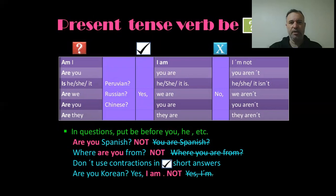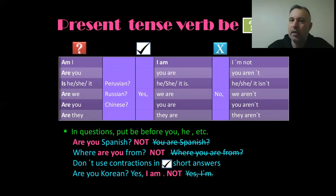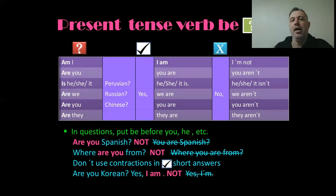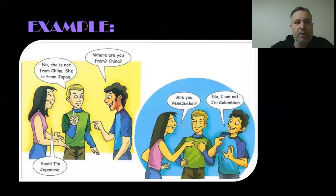This is the interrogative form — everybody remembers this. Are you Spanish? Are you Brazilian? Where are you from? Don't use contractions in questions. For short answers: are you Korean? Yes, I am. You never say 'yes, I'm' alone — that's incorrect. You say 'yes, I am' or the full 'yes, I'm Brazilian.' 'I'm' alone is incorrect.